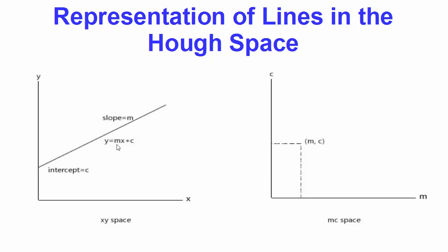In this equation y = mx + c, m is the slope of the line and c is the intercept. If you know the values of m and c, you can represent this line in XY coordinates. In Hough transform, you can represent this line in another form called the MC space or Hough space — where m is on the horizontal axis and c is on the vertical axis.